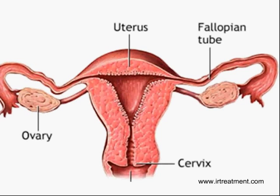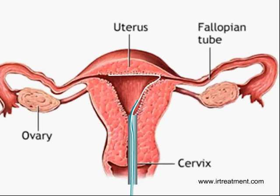A tube is first inserted into the uterine cavity, and another tube with an angle is inserted through this. Then, with the help of a flexible guide wire, the tube is manipulated so that it is at the opening of the fallopian tube. The wire is then gently probed into the opening of the fallopian tube to remove any debris, mucus plug, or a membrane.